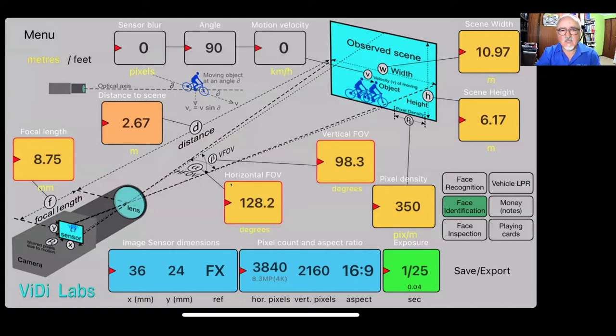So that means, in this case, we have found out for the full frame sensor with 4k resolution, that we have, according to the standards, 350 pixels per meter density, which means clarity of the image, with the 8.75 mil at 2.67 meters.